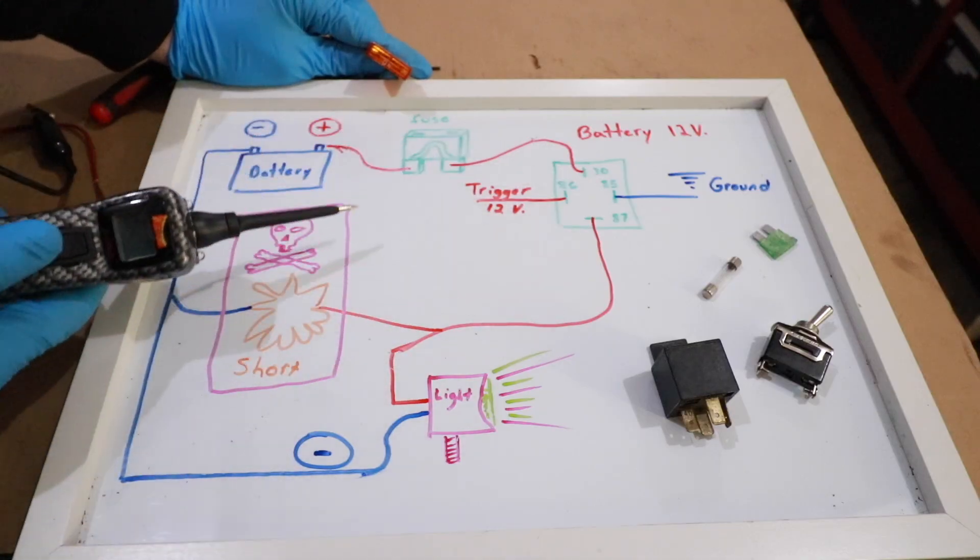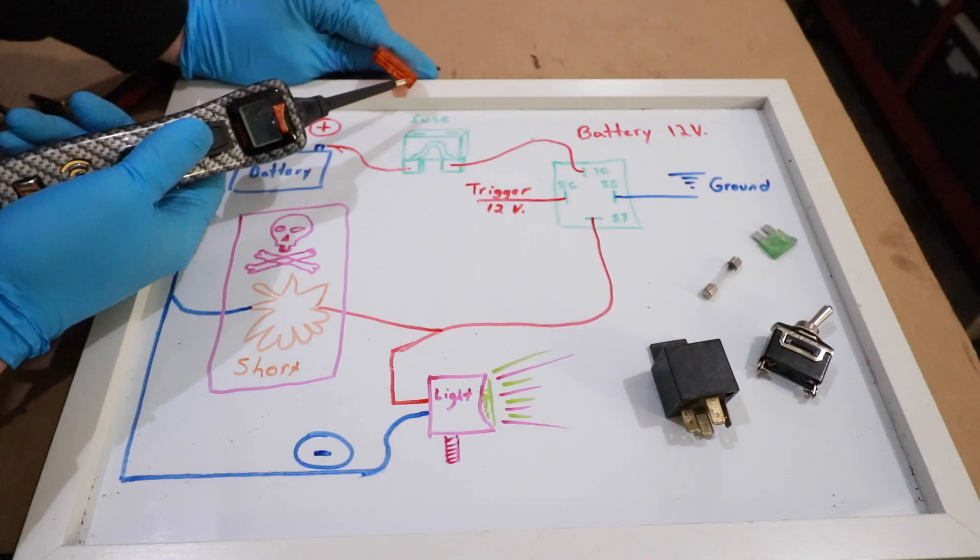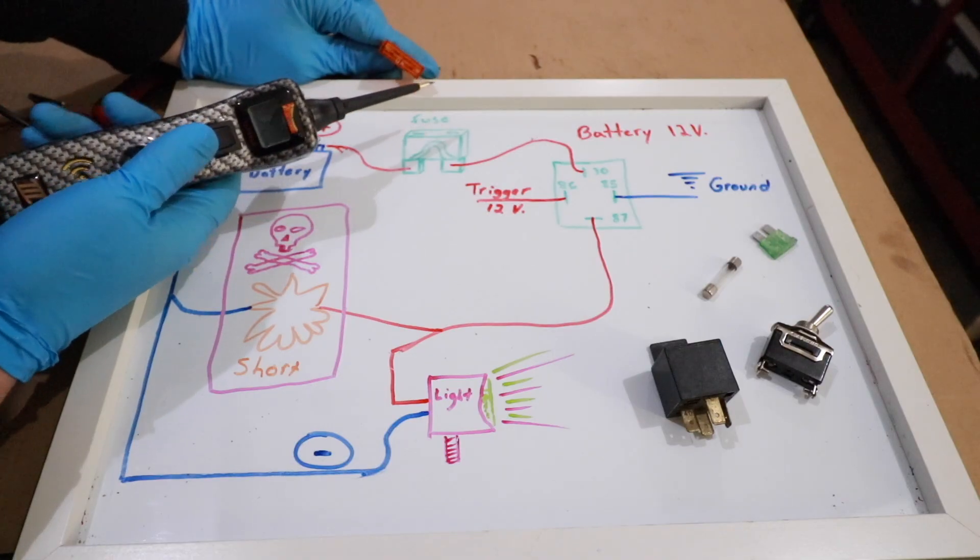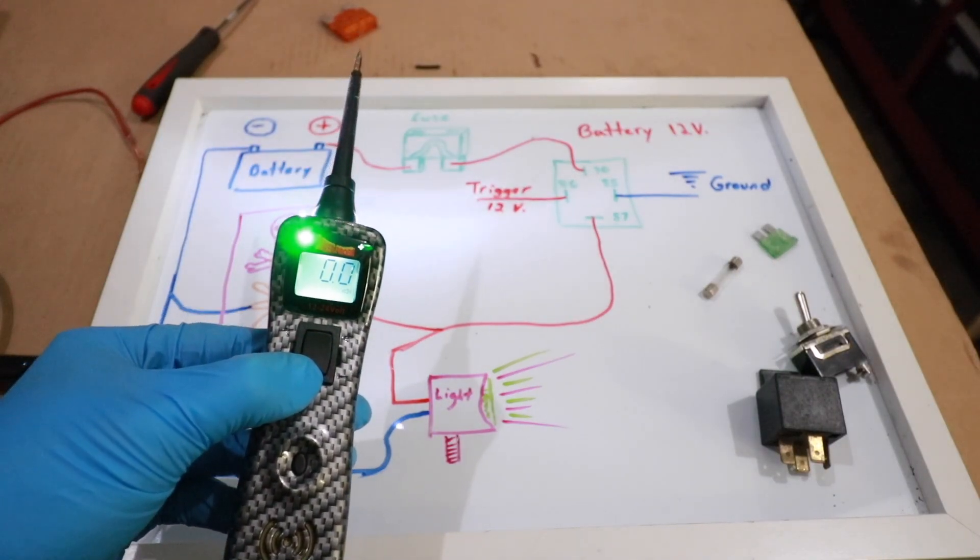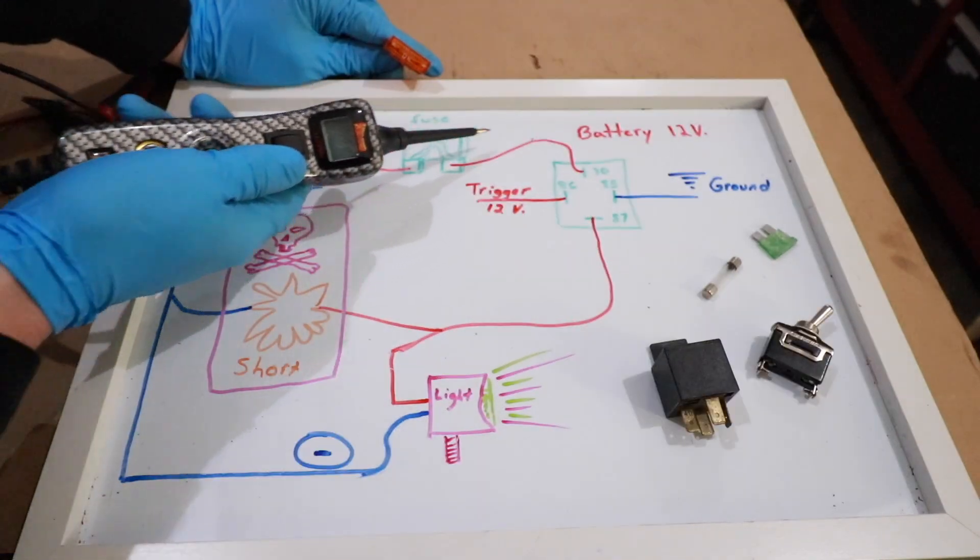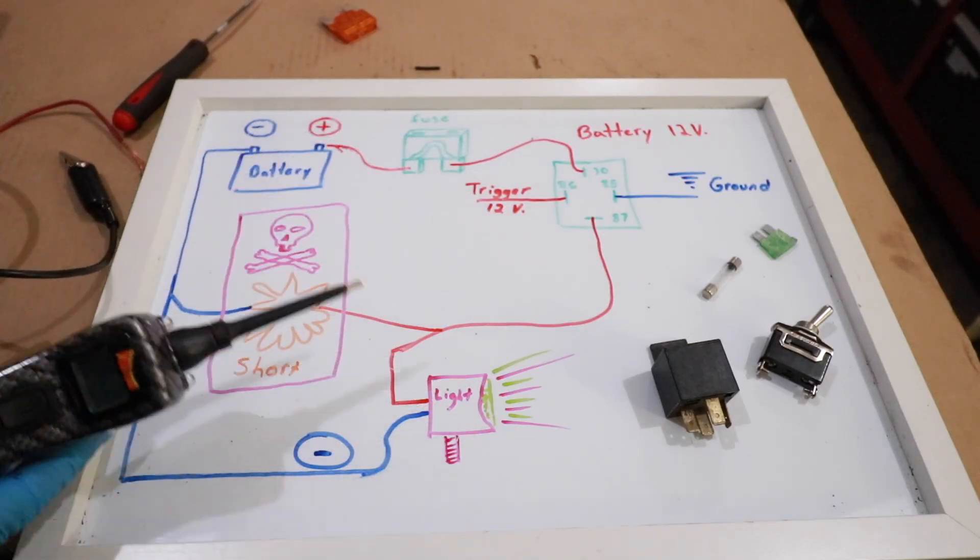If you have some type of short circuit, what you're going to find is that when you go to the output side of the fuse, you're going to hear a grounding signal. There's going to be a green arrow, zero volts coming through, and you're going to hear that indicating that we have some type of short.